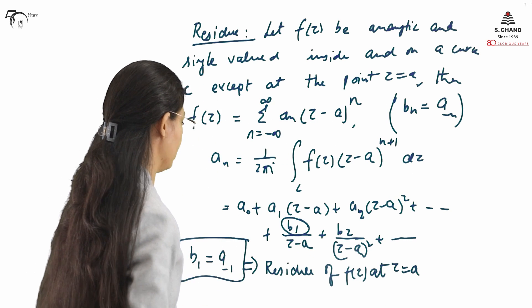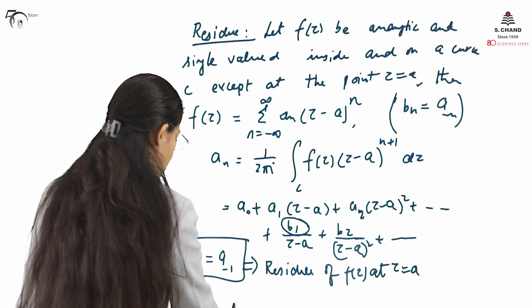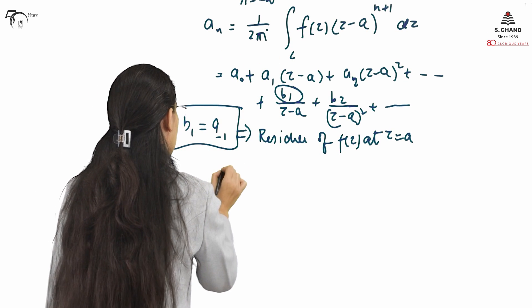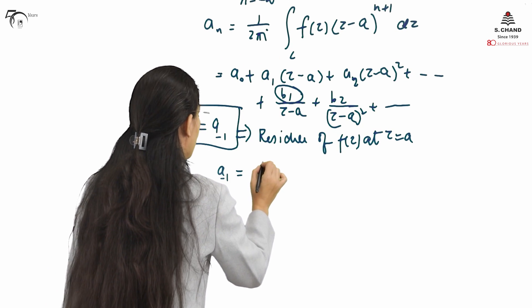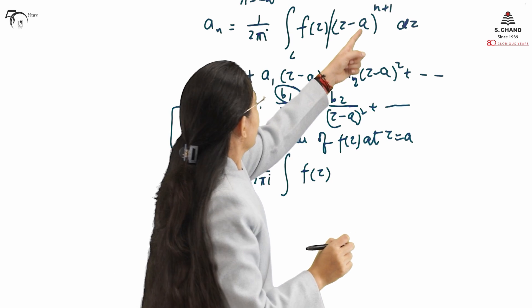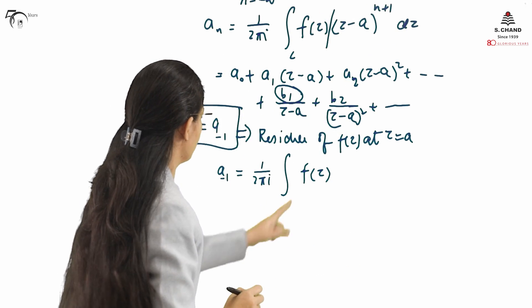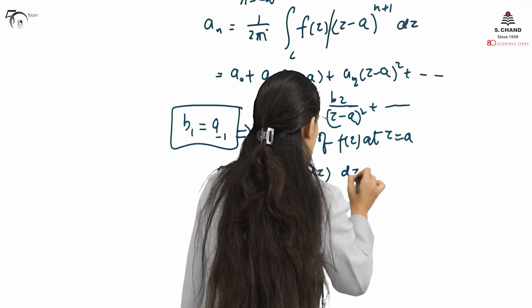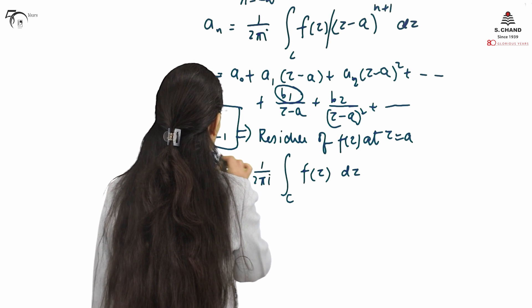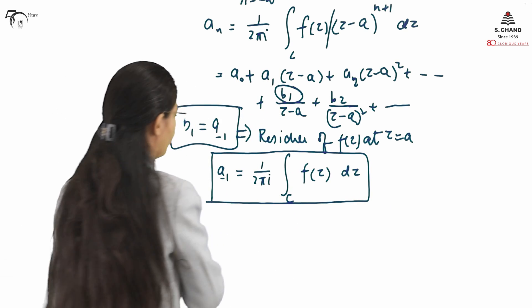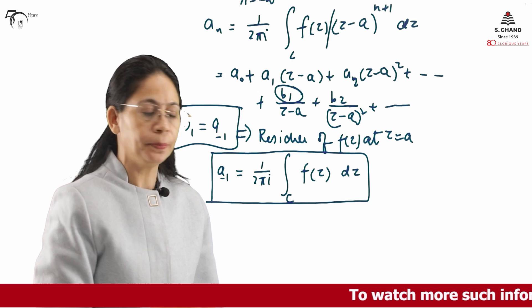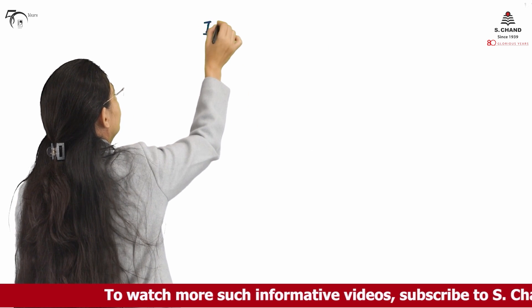This a_{-1} or b_1 is called the residue of F(z) at z equals a. Substituting n = -1 into the coefficient formula, we get: a_{-1} = (1/2πi) ∮_C F(z) dz, where integration is taken over C. This integral is called the residue of F(z) at z equals a.